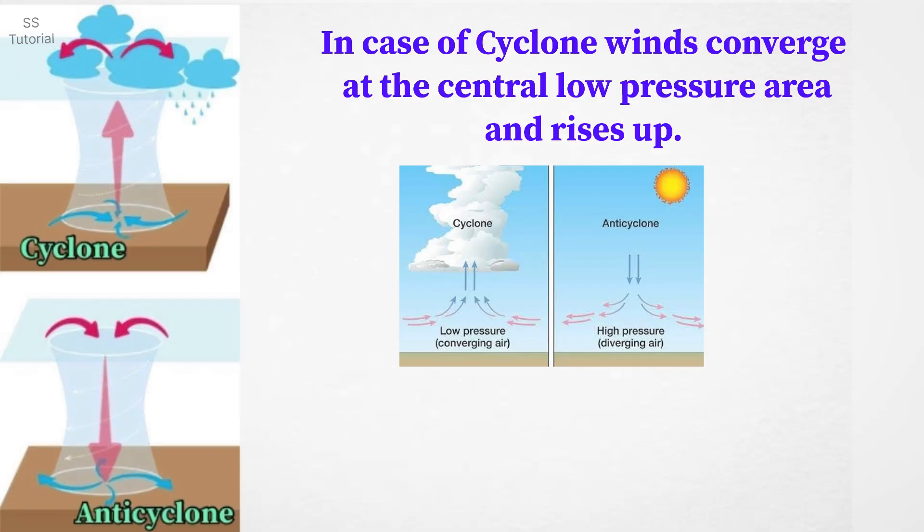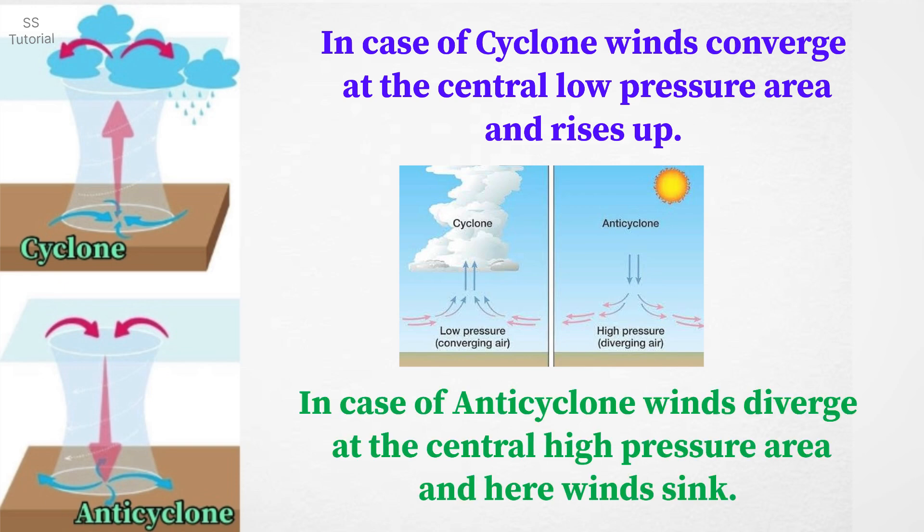In case of cyclone, winds converge at the central low pressure area from the surrounding high pressure area and rise up, whereas in case of anticyclone, winds diverge from the central high pressure area to the surrounding low pressure area and here wind sinks.